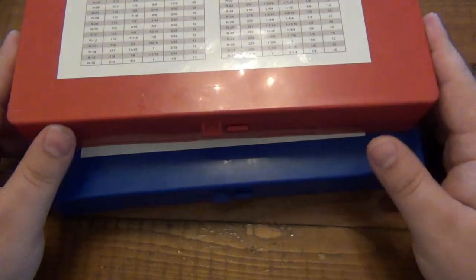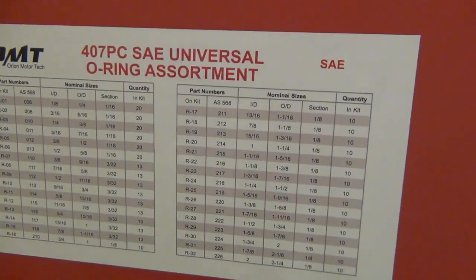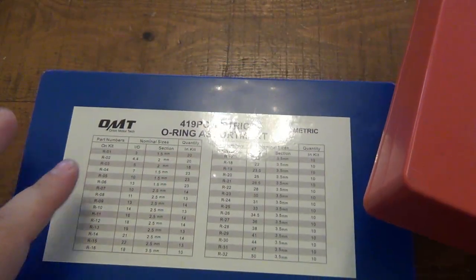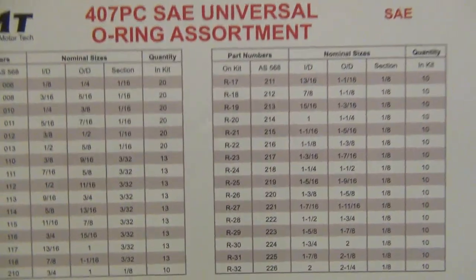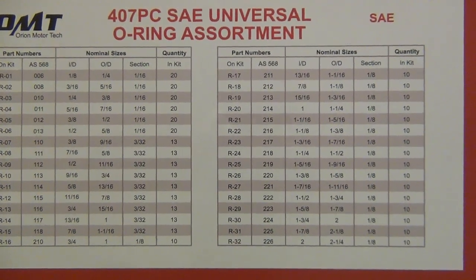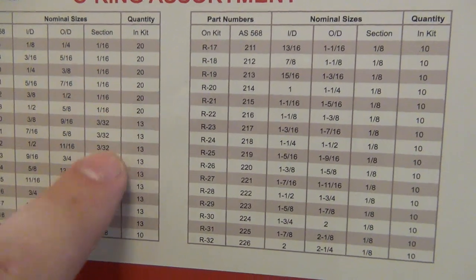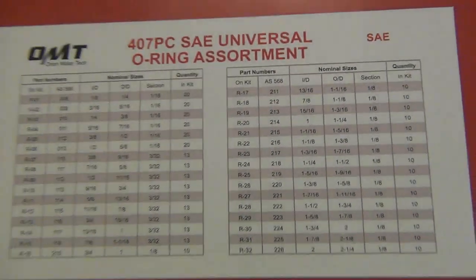This comes with two boxes. There's a blue box and red box. Red box is standard. It says universal on there. And the blue box is all the metric sizes. So you could see the actual size chart on here. And there's a ton of them. You can see the quantity. There's 20 of these, 13 of these. Obviously as they get bigger there's less of them.